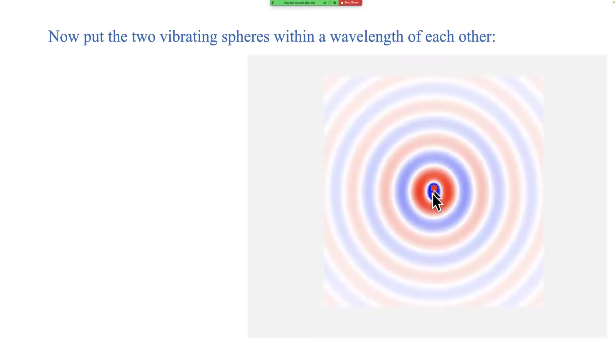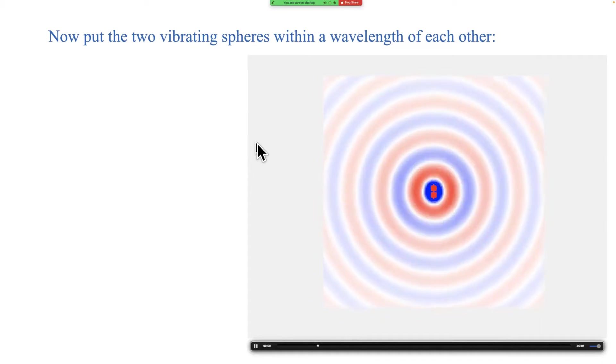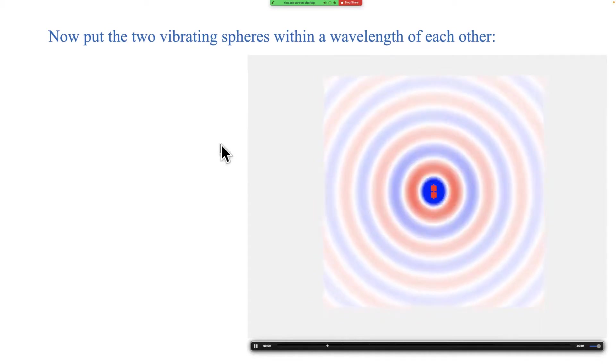So what happens if we put those two vibrating spheres closer together? So these are the same two spheres. We set those going. This is two pulsating spheres. They're now closer than a wavelength to each other. And what do you see? Well, you see essentially the same picture that we had when we only had one pulsating sphere. The two things just add together, but they can't cancel. They're always too close together for the two things to cancel. And so two pulsating spheres very close together is really not very different from one pulsating sphere.